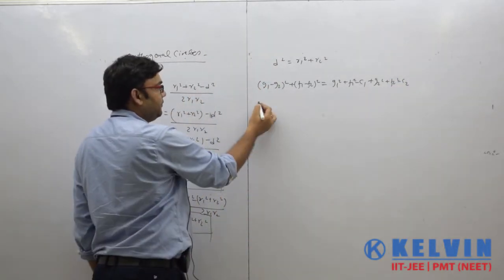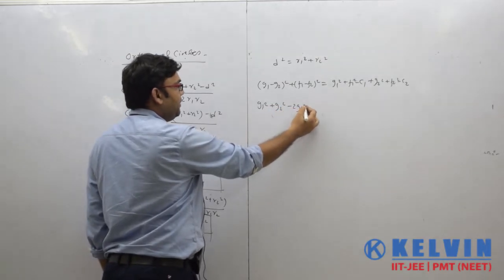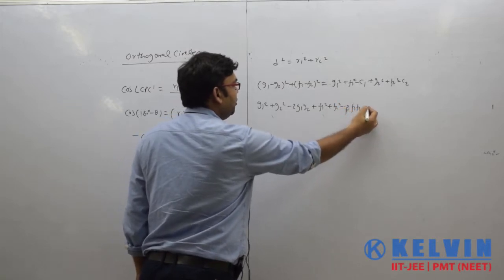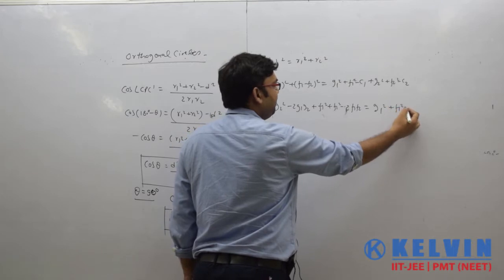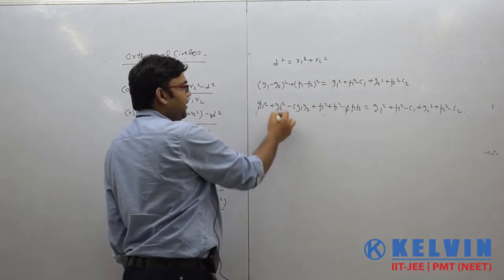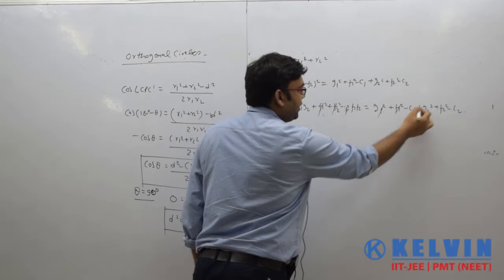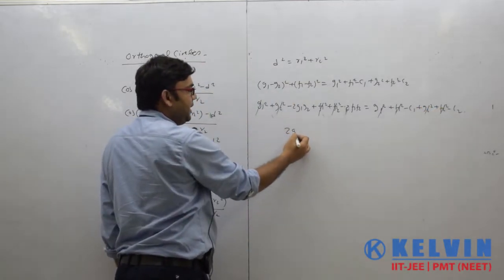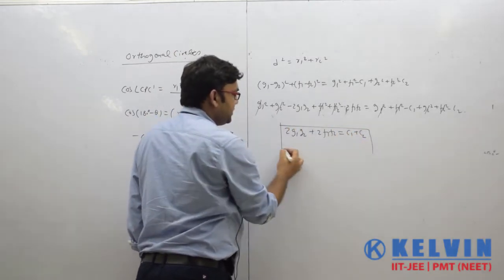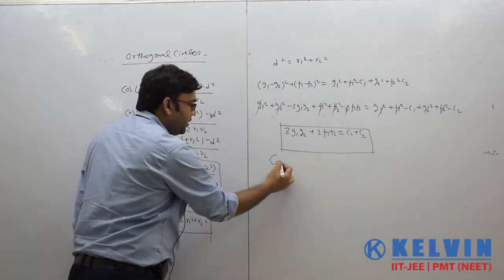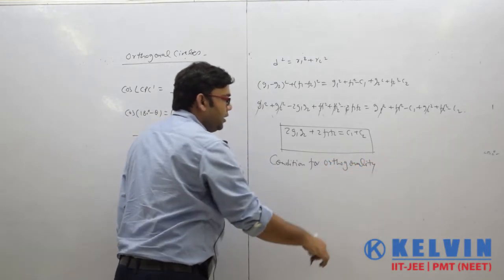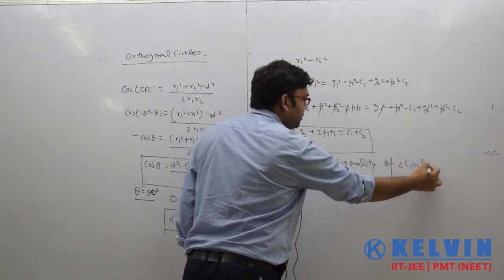Okay, next: g₁² plus g₂² minus 2g₁g₂ plus f₁² plus f₂² minus 2f₁f₂ is equal to g₁² plus f₁² minus c₁ plus g₂² plus f₂² minus c₂. This is known as the condition for orthogonality of two circles.